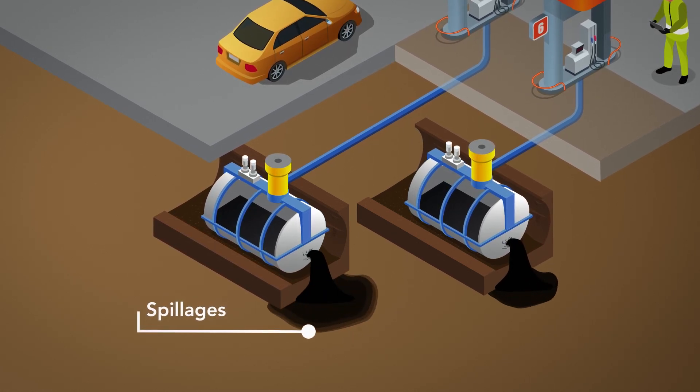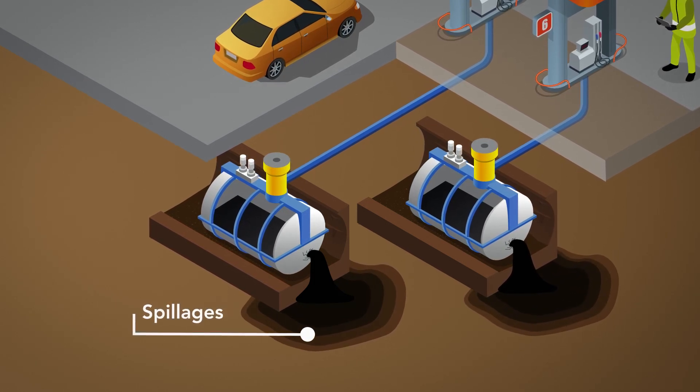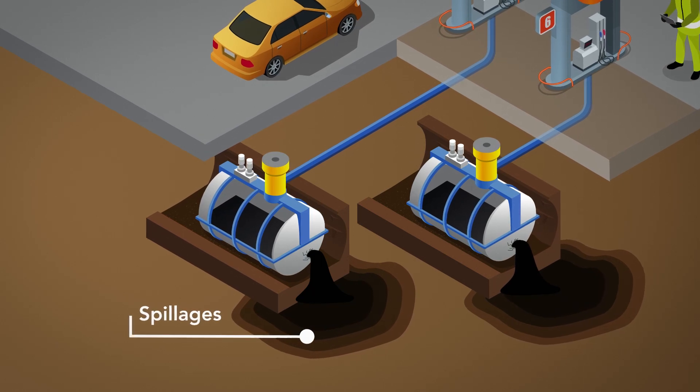For tanks above ground, this can be easily spotted and repaired. For steel tanks installed underground with no monitoring, there is the potential for leaks to go unnoticed.